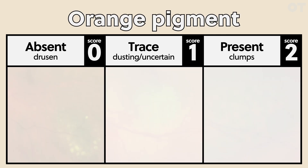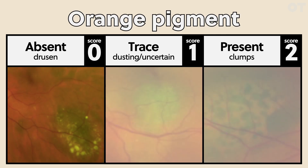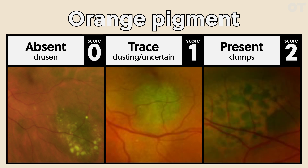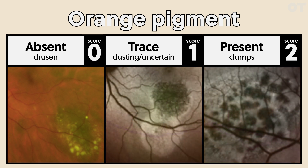In terms of orange pigment: if there's no orange pigment at all, you give it a score of zero. If there's a dusting of orange pigment, you give it a score of one. And if there are obvious clumps of orange pigment, you give it a score of two. Autofluorescence can be extremely helpful for looking for orange pigment, because orange pigment — or lipofuscin — fluoresces on autofluorescence.